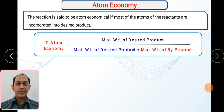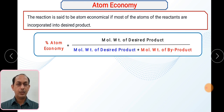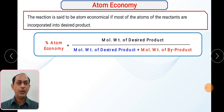To calculate percentage atom economy, the formula is: molecular weight of desired product divided by the sum of molecular weight of desired product plus molecular weight of byproduct, multiplied by 100. So it is the ratio of molar mass of product to the sum of product plus byproduct, times 100. Remember to multiply by 100.